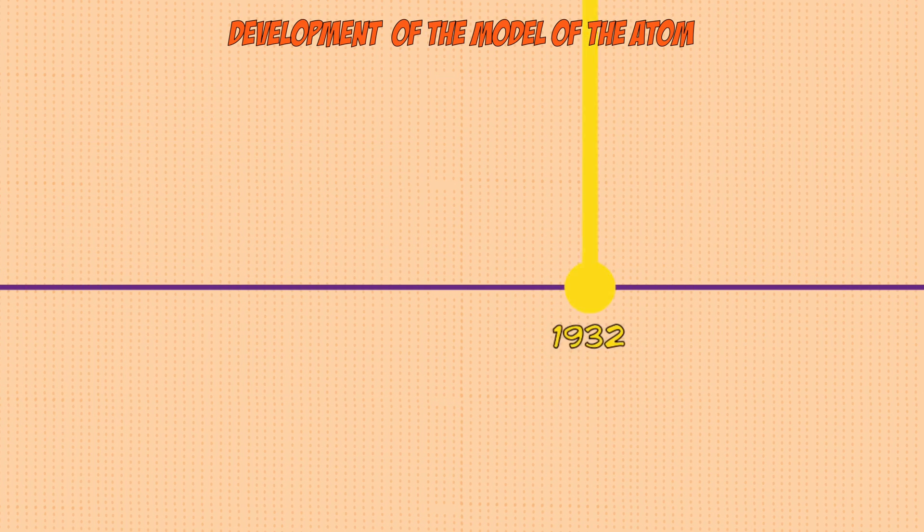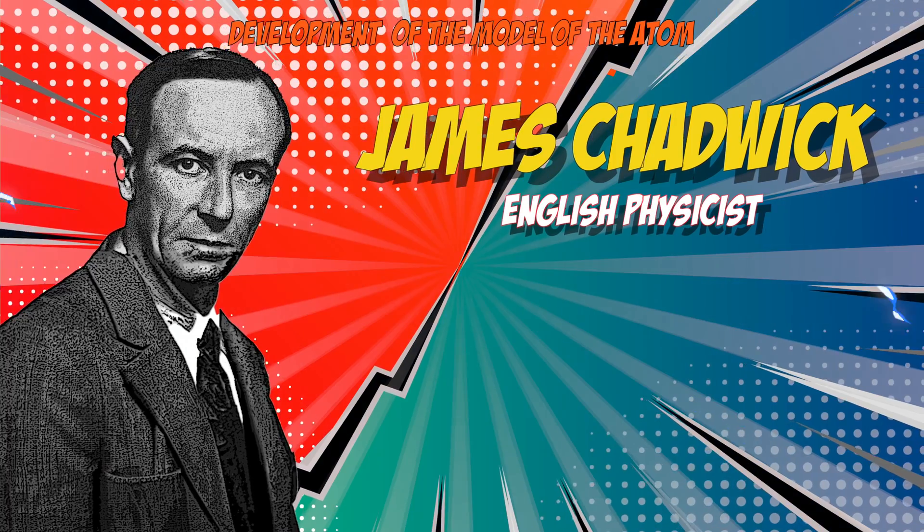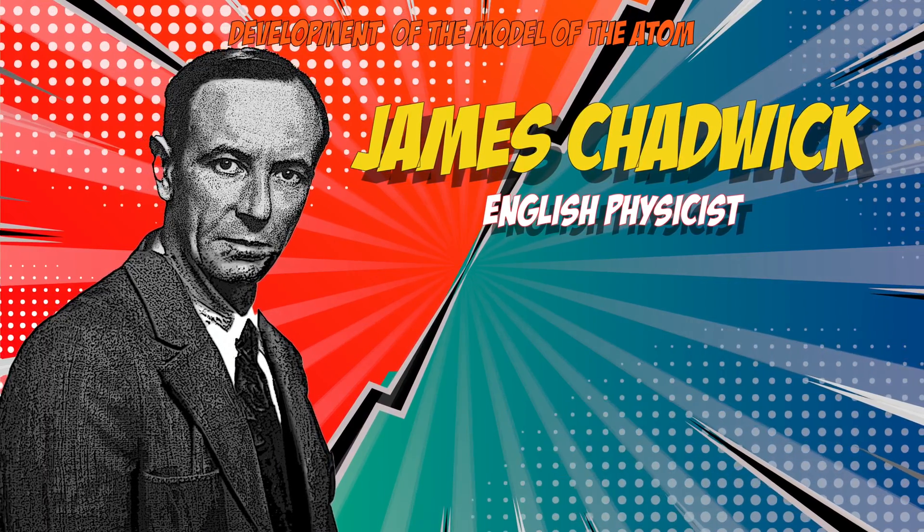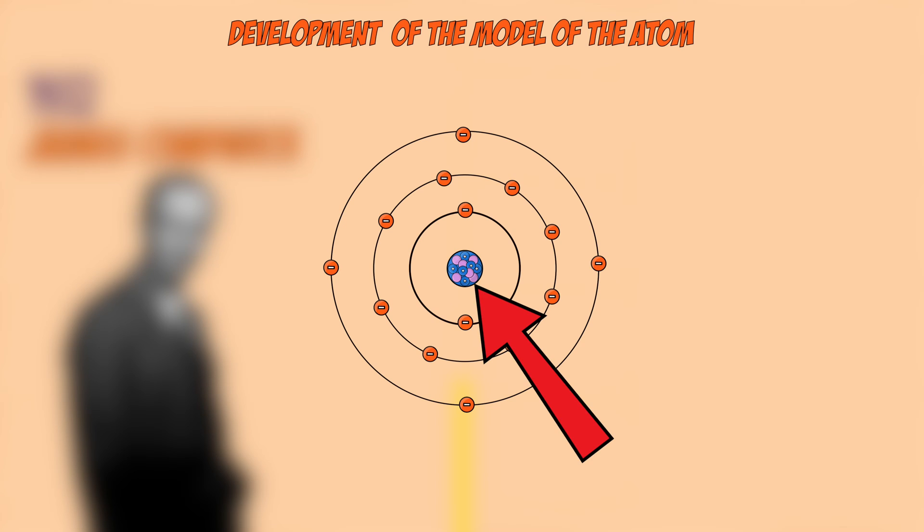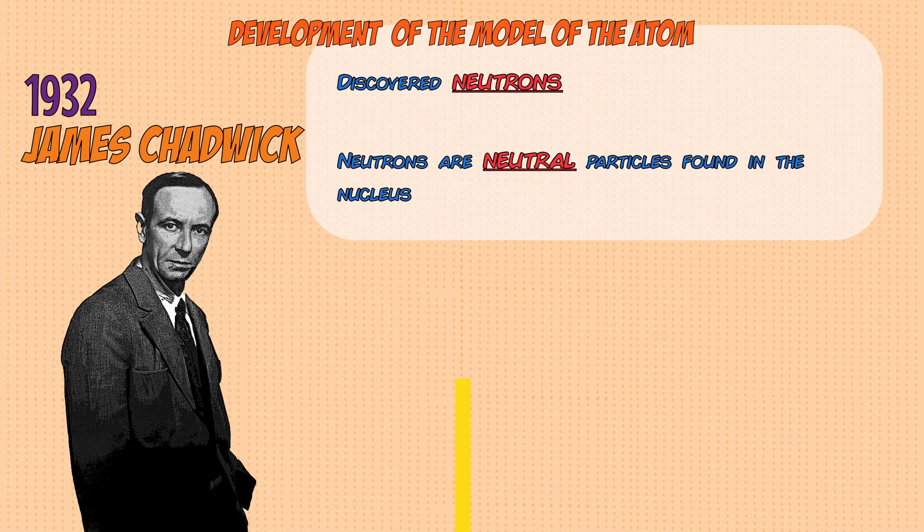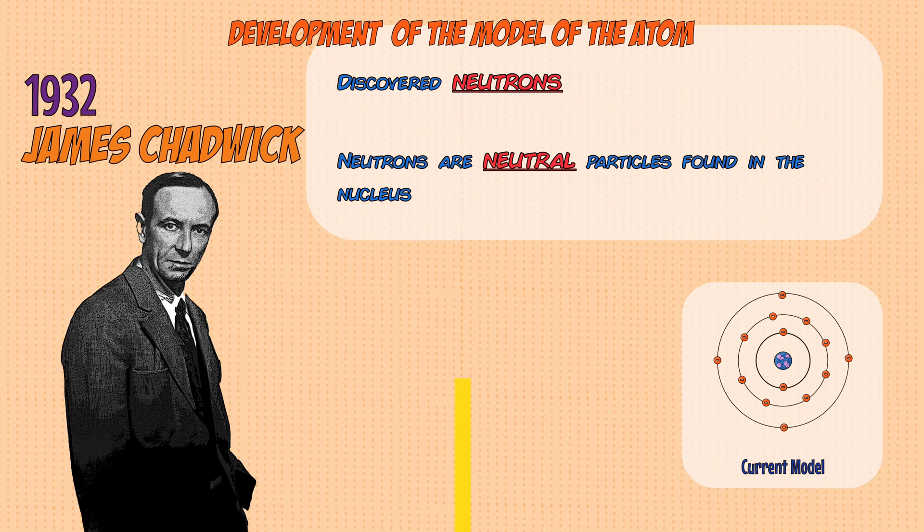Fast forwarding around 20 years later leads us to James Chadwick. His experimental work provided evidence for the existence of another particle in the nucleus that had no charge. These were neutrons and the discovery of them further increased our understanding of the structure of atoms, and this led to the model that we use now.